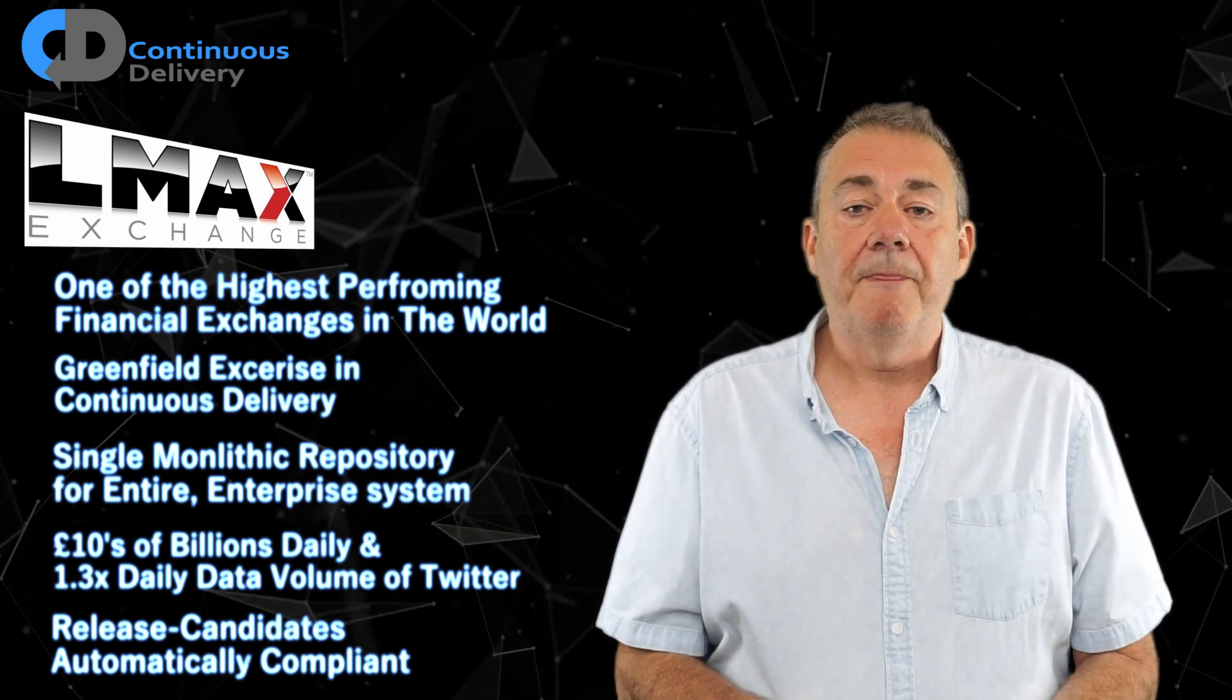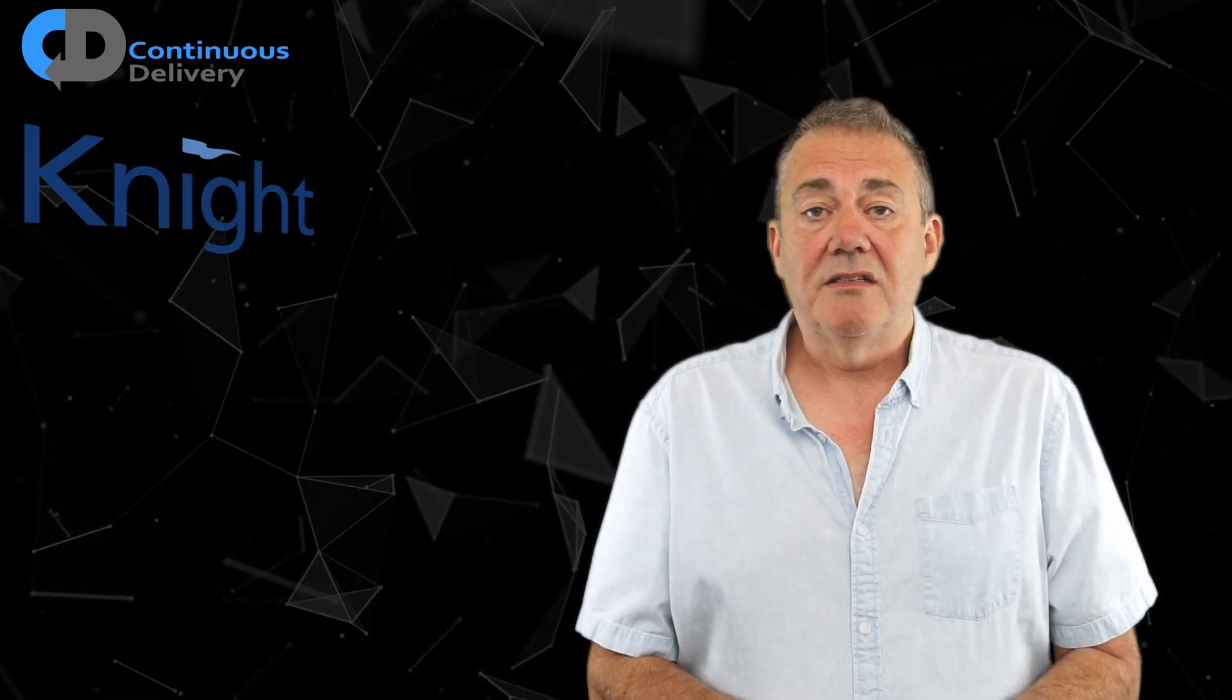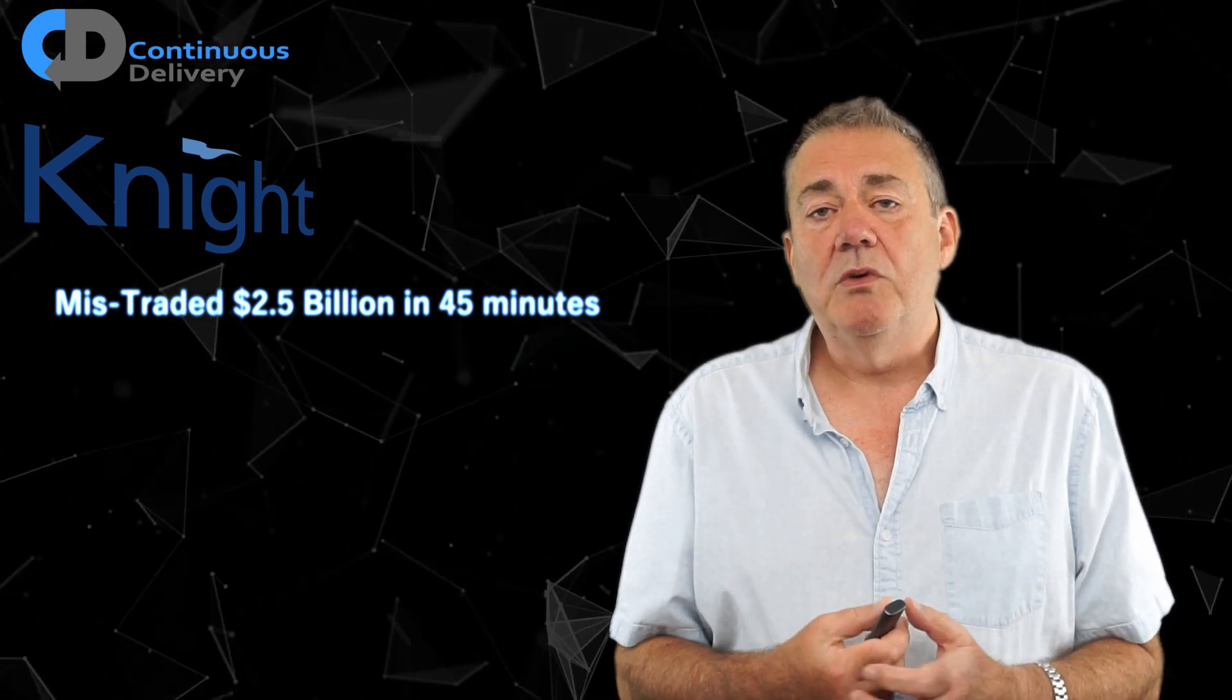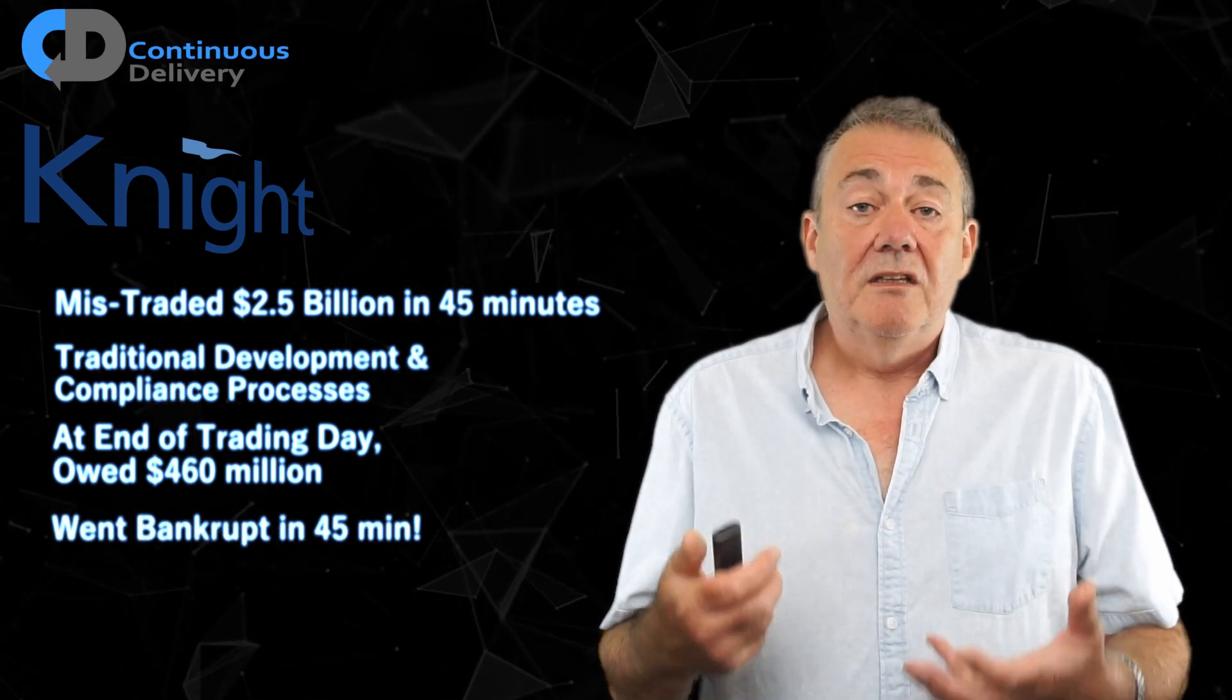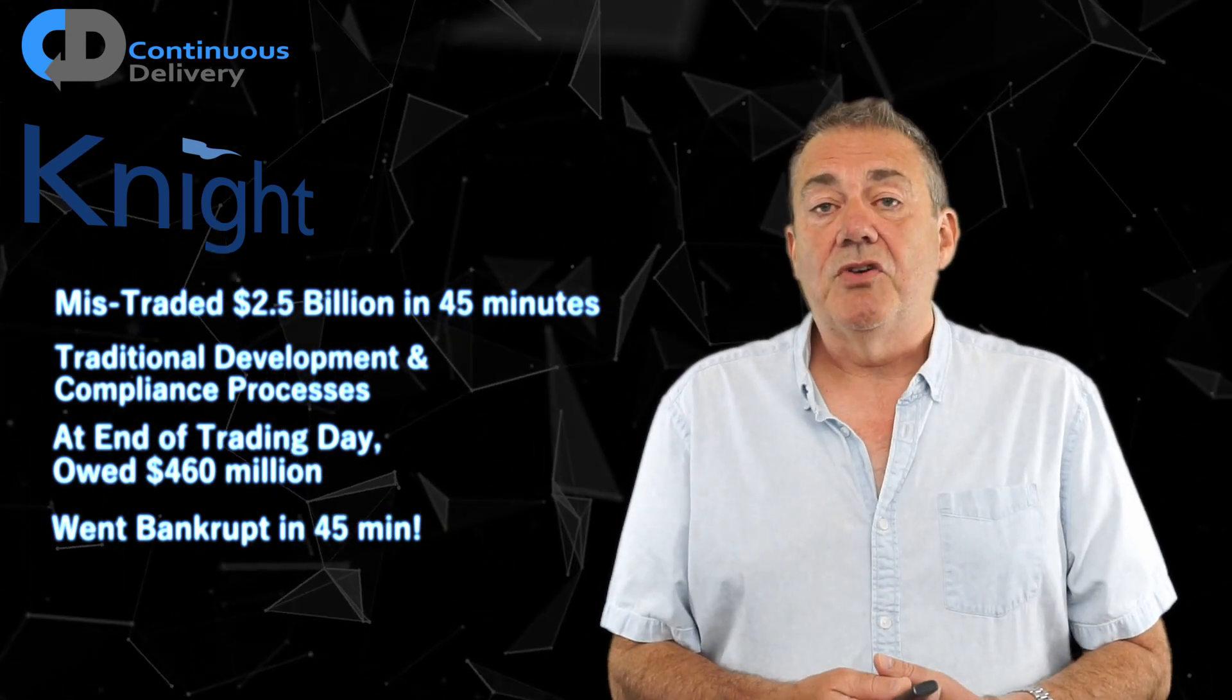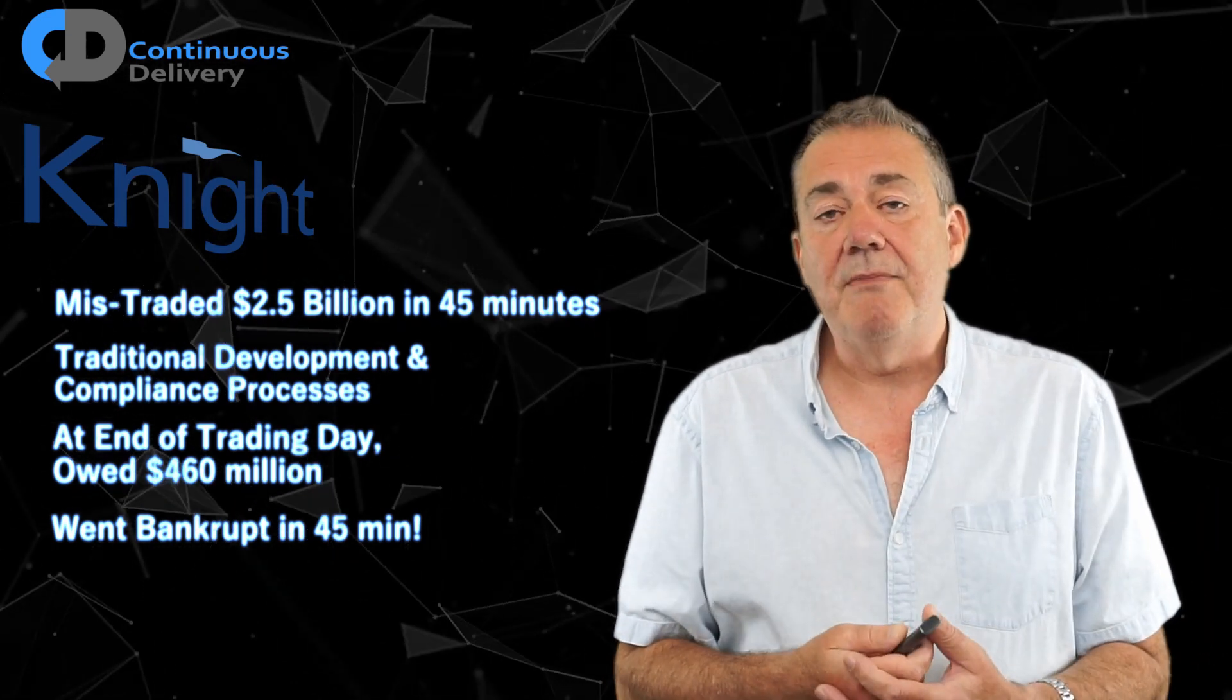Let's just for a moment contrast this with one of the worst, or at least most expensive, software disasters that we've faced so far, and this was Knight Capital, who mistraded $2.5 billion worth of assets in the New York Stock Exchange over a 45-minute period using traditional, ineffective software development and release methodologies. The company went bankrupt as a result of this. They ended up with a bill at the end of the trading day, after rewinding the $2.5 billion in misstrades, of about $460 million, which they couldn't afford to pay.